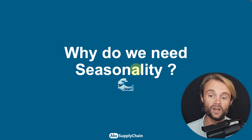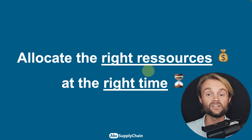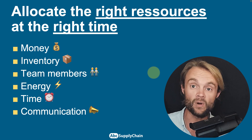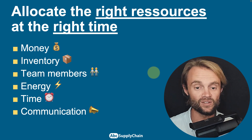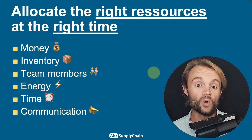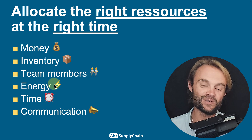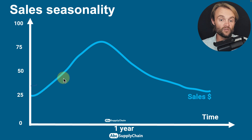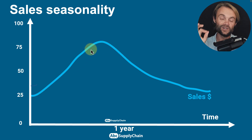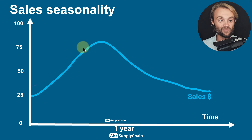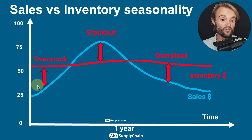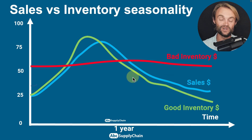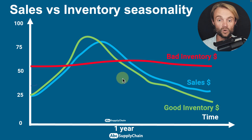So before going to Excel, why do we need seasonality? We need seasonality to allocate the right resources at the right time. It could be money, cash to buy inventory, to recruit people for the right time for your warehouse, for your stores, for your factory — the right energy, like time or energy supply for your factory — and the right communication at the right time. For example, if you have a peak of sales for Christmas, you need the right communication with marketing, operations, and supply chain to allocate the right resources. Otherwise you're going to have overstock before, stock out during the peak, and overstock again after. My goal is really to help you implement seasonality to improve your forecast and the overall performance of your company.